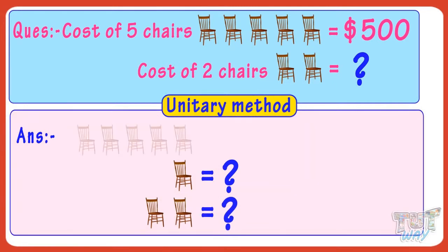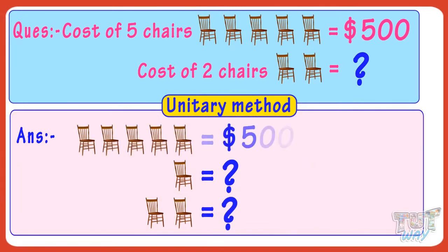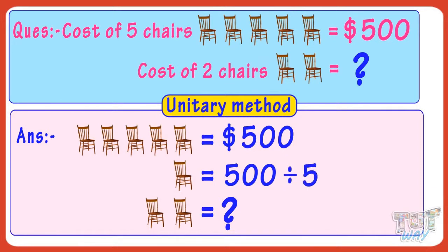If the cost of five chairs is $500, then the cost of one chair is $500 divided by 5. And 500 divided by 5 equals 100. So the cost of one chair is $100.